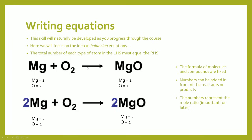The second step is to be able to write simple equations. This skill will naturally be developed as you progress through the course and learn certain rules of different chemicals reacting with other substances. But here we'll focus on the idea of balancing equations, because this is crucial. The total number of each type of atom on the left-hand side of the equation has to equal the right-hand side — atoms can't disappear or be gained from one side to the other.